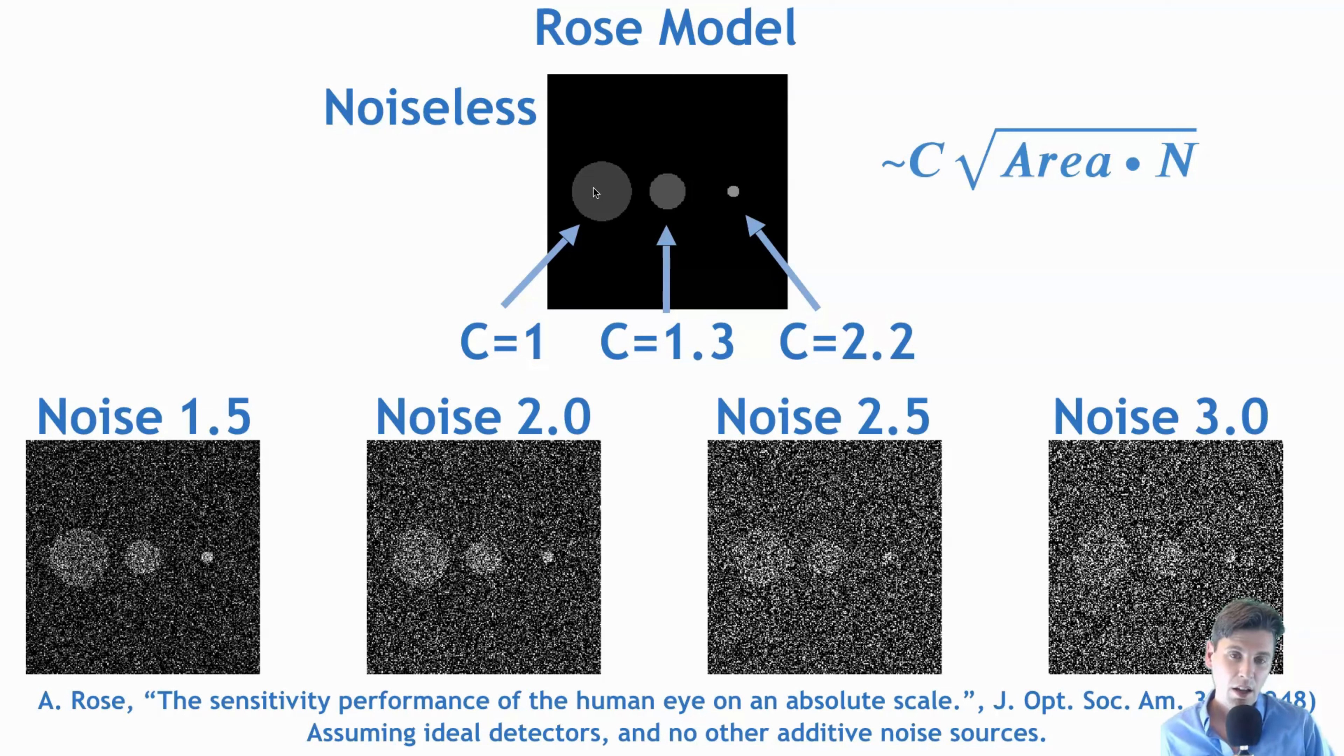And so you can see here, now in this case, rather than having the same contrast in all these simulated lesions, so again, simulated lesions in a uniform background, rather than having the same contrast, now we have higher contrast in this smallest lesion. And then you can see now.